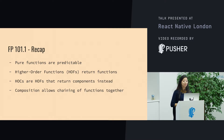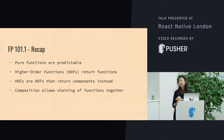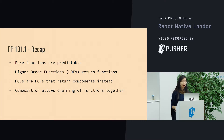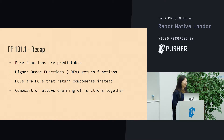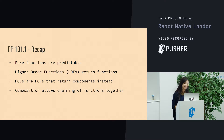To recap: pure functions are predictable — they don't allow for any side effects, they don't mutate any data elsewhere, there's no shared state. A higher-order function is a pure function that returns another function. A higher-order component is a type of higher-order function that returns a component instead of a function. And composition is the act of merging them all together.